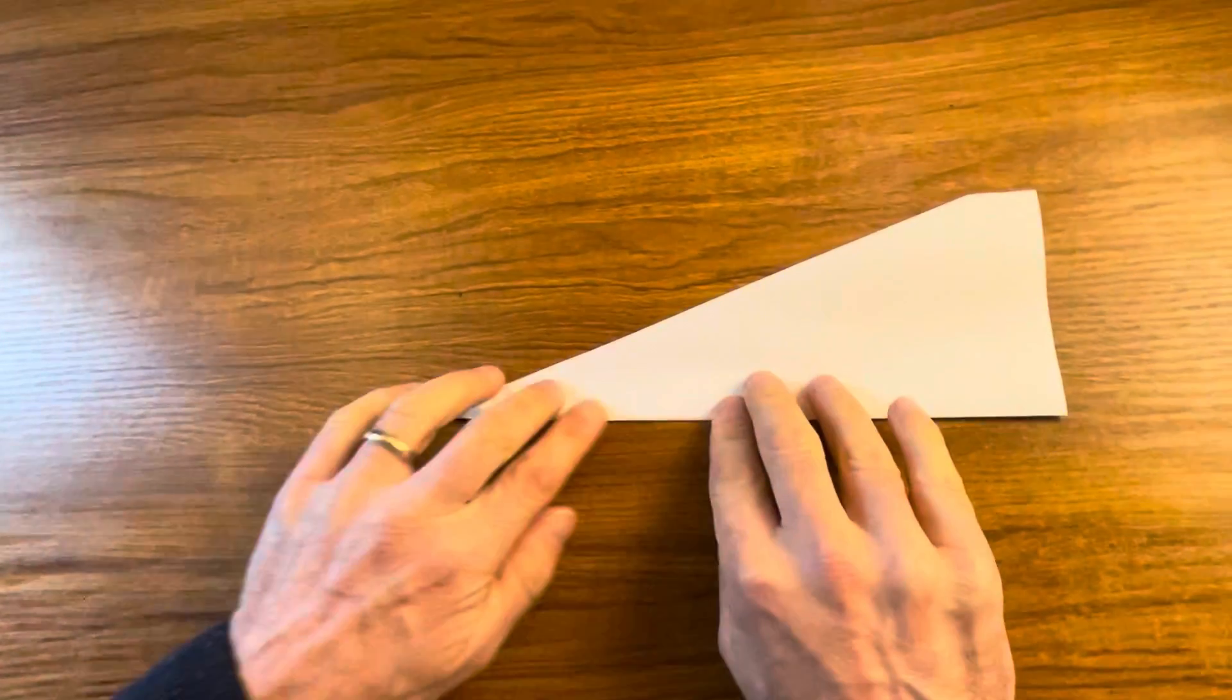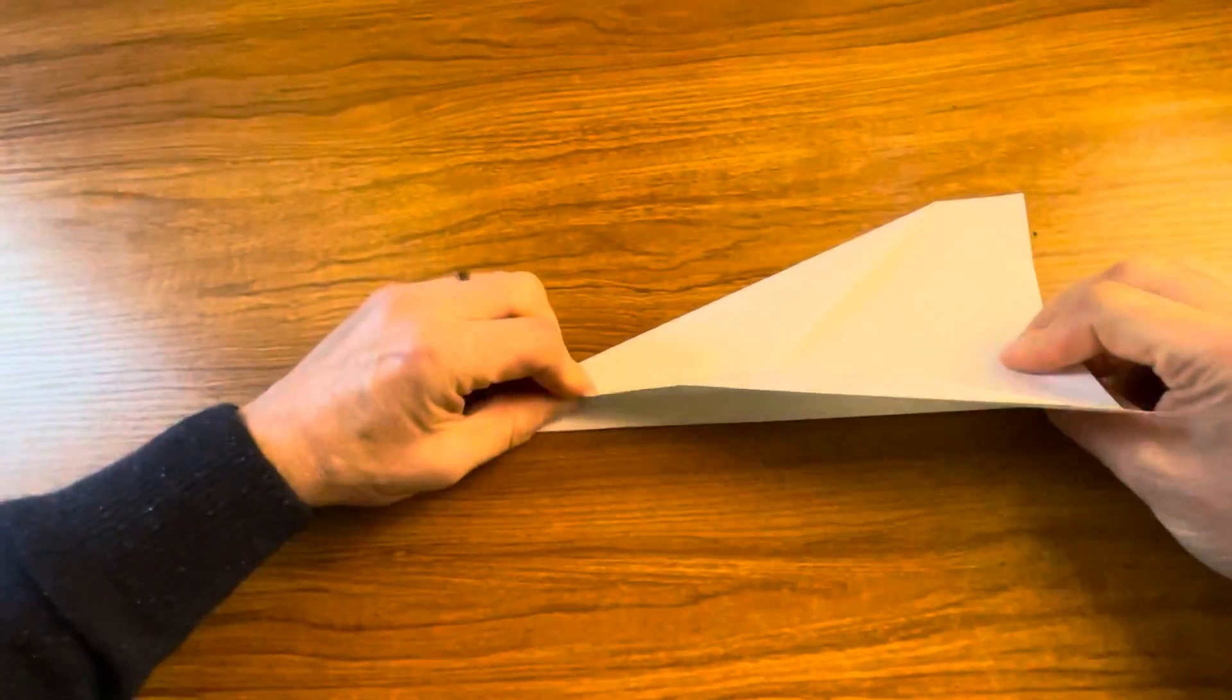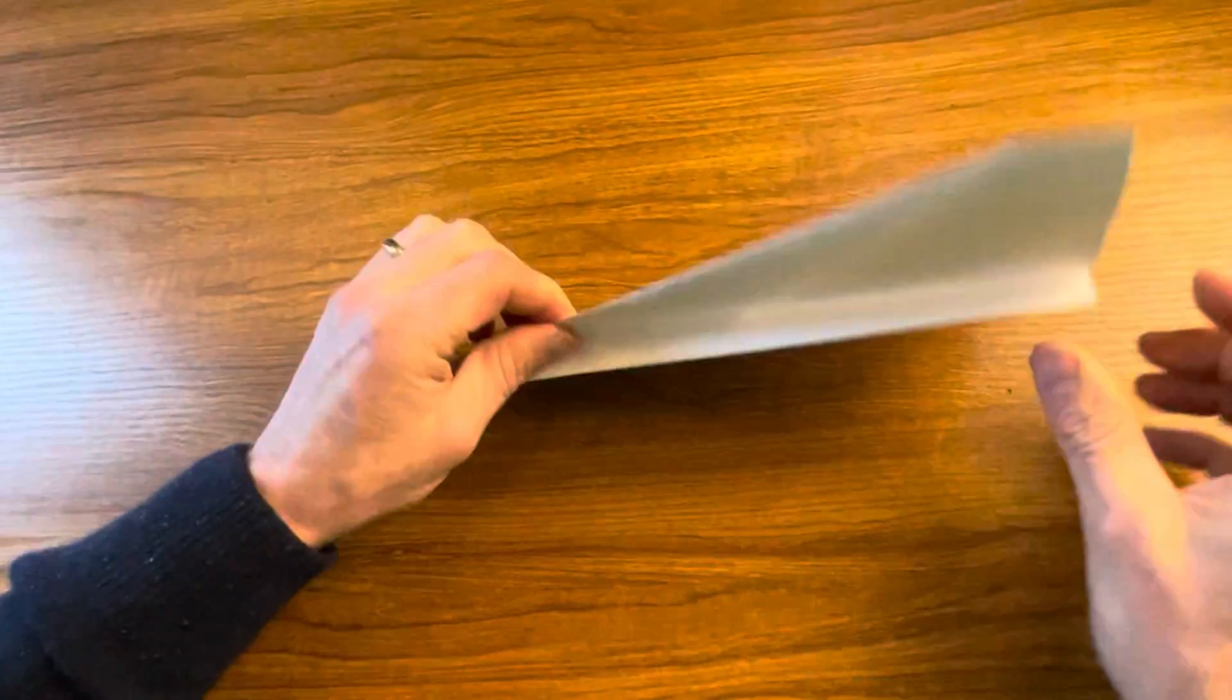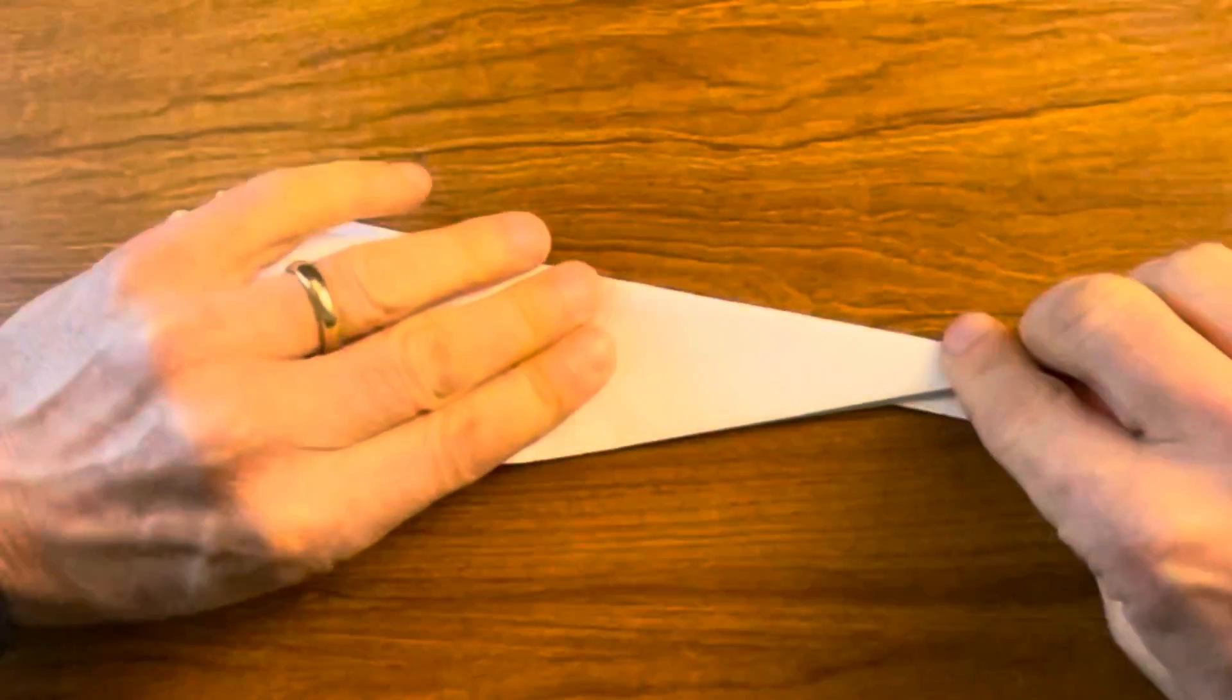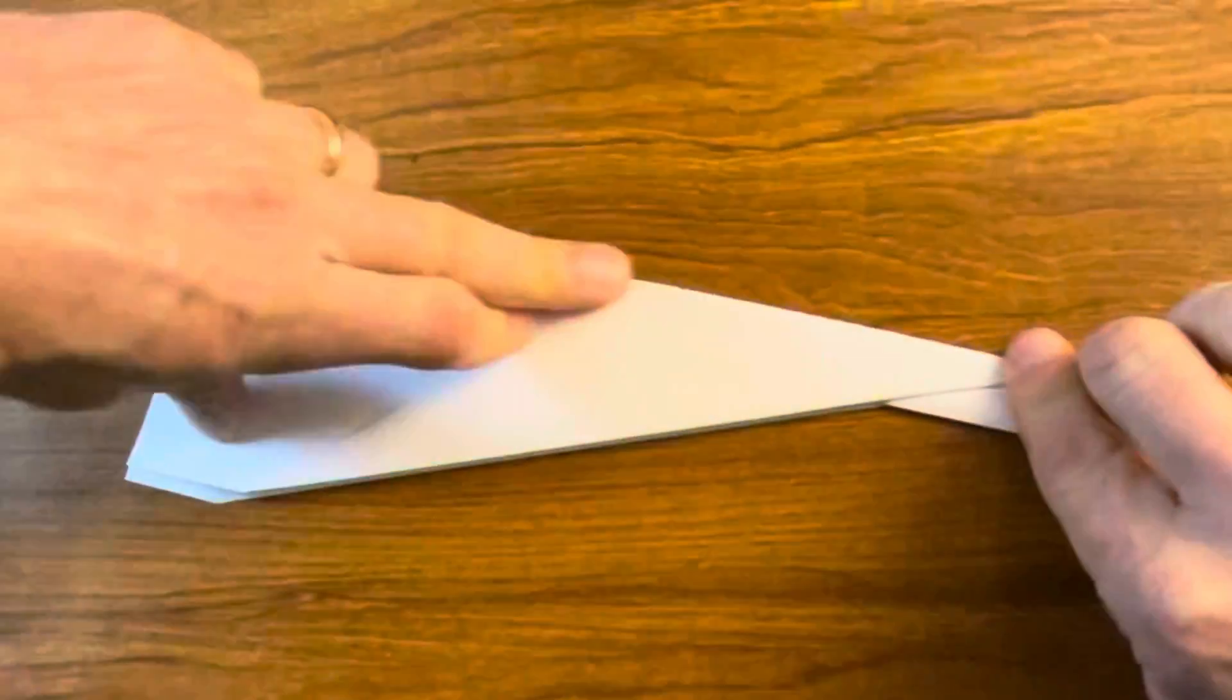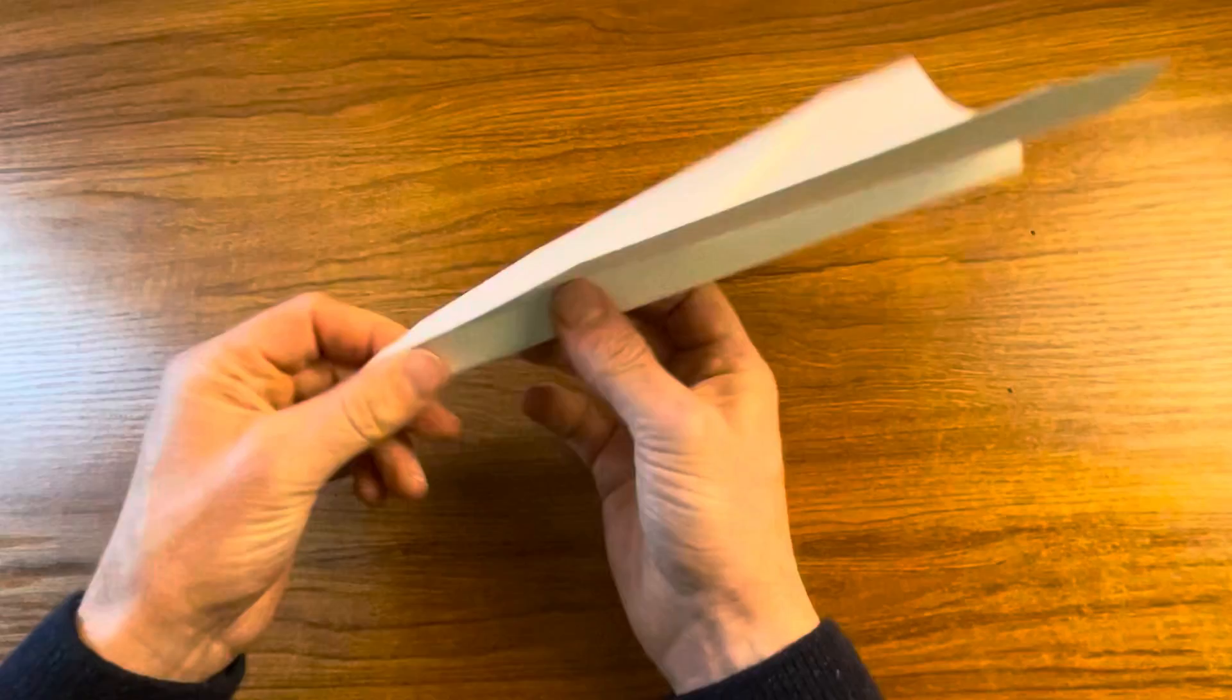I'm going to fold that over so that it comes up like so. And then this folds down like so. And there's going to be one wing. And then this one is going to fold down like so all the way down. And now look what we've got. Wow!